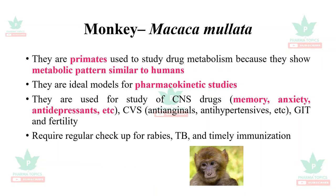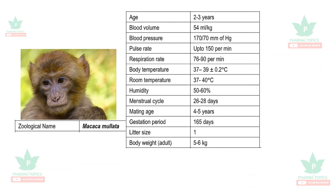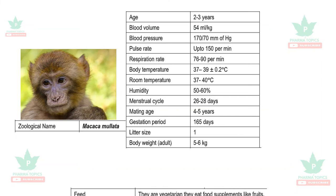The Macaca mulatta data: age is two to three years, blood volume is 54 ml per kg, body temperature is 37 to 39°C, which is very similar to humans. The menstrual cycle is 26 to 28 days, gestation period is 165 days, and litter size is one per pregnancy. Body weight is five to six kg. The diet is vegetarian — fruits and food supplements.